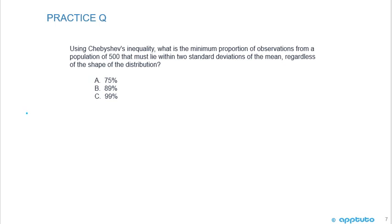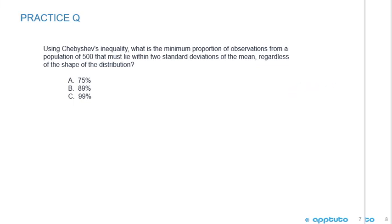Using Chebyshev's inequality, what is the minimum proportion of observations from a population of 500 that must lie within two standard deviations of the mean, regardless of the shape of the distribution? A, 75%, B, 89%, or C, 99%.